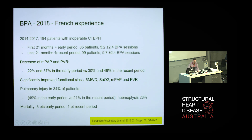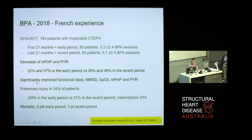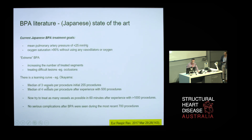A recent summary of French experience confirms a definite learning curve. Patients treated for inoperable CTEPH were divided into an early period (first 21 months) and a later period (last 21 months), showing increased haemodynamic improvements and reduced injury over time. The Japanese are now performing what might be called extreme BPA — their treatment goals are normalisation of pulmonary haemodynamics and oxygen saturation. After experience with 1,000 procedures, they now try to treat as many vessels as possible in one hour, and there have been no serious complications in the last 700 procedures.